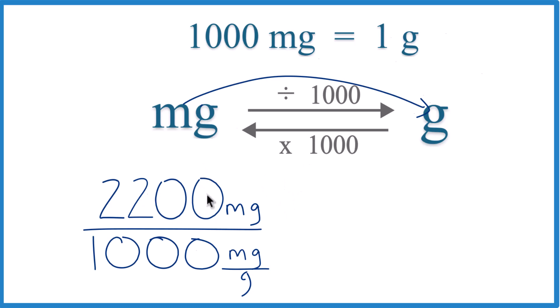But take a look at the units here. We have milligrams on top—that's our 2,200 milligrams we were given—and on the bottom we have 1,000 milligrams per gram. That's where we get our conversion factor. Because we have milligrams on top and bottom, they cancel out, and we're left with grams. So we know that we did it correctly.